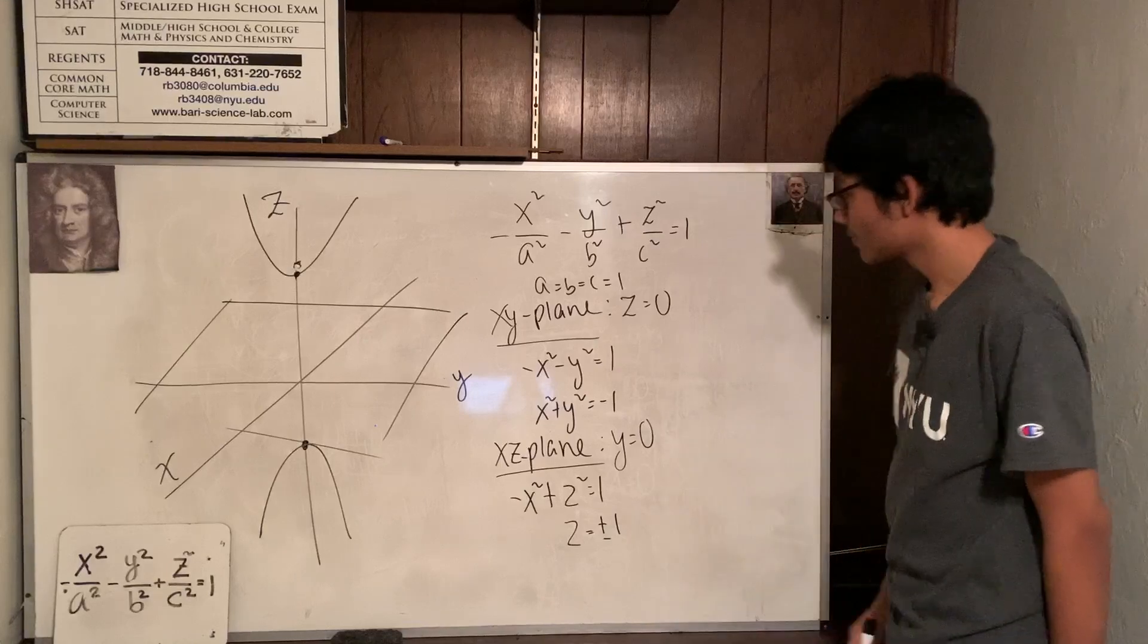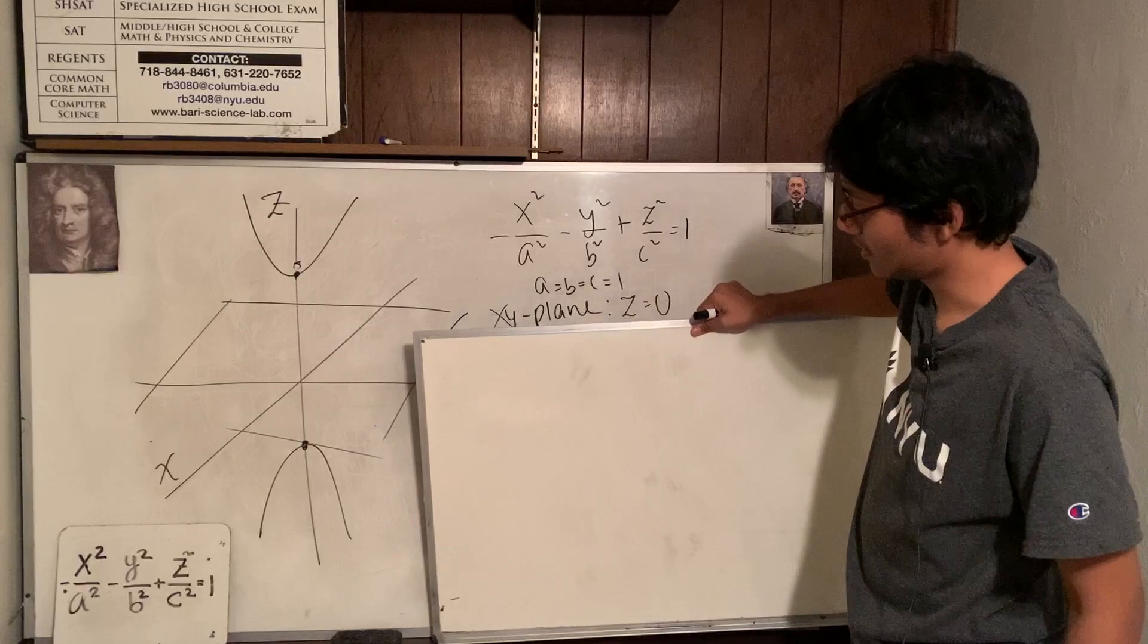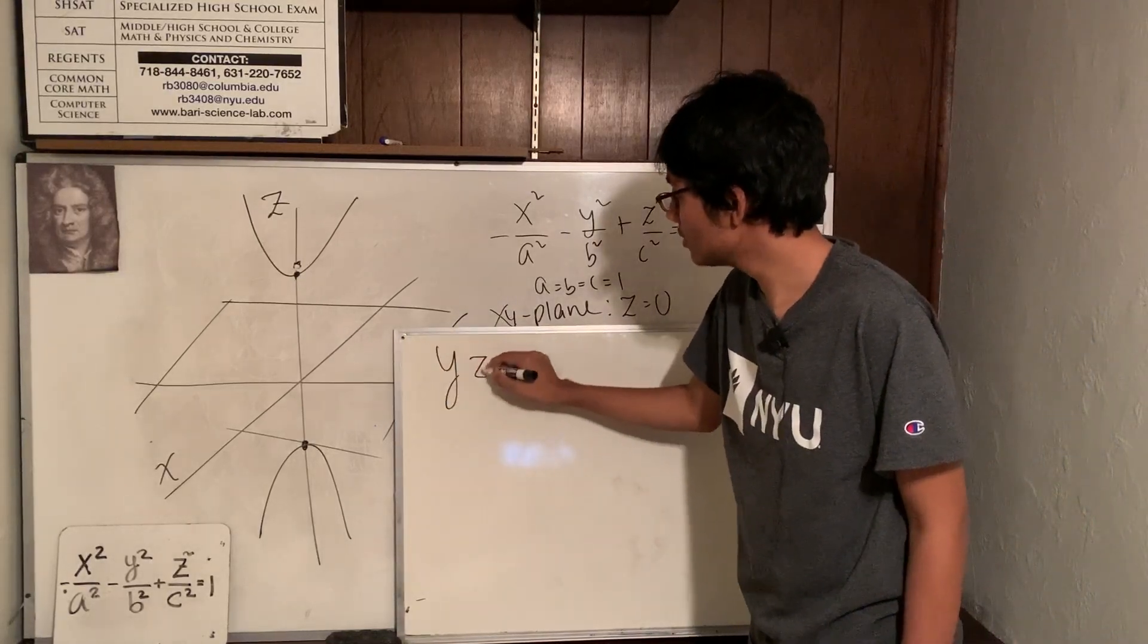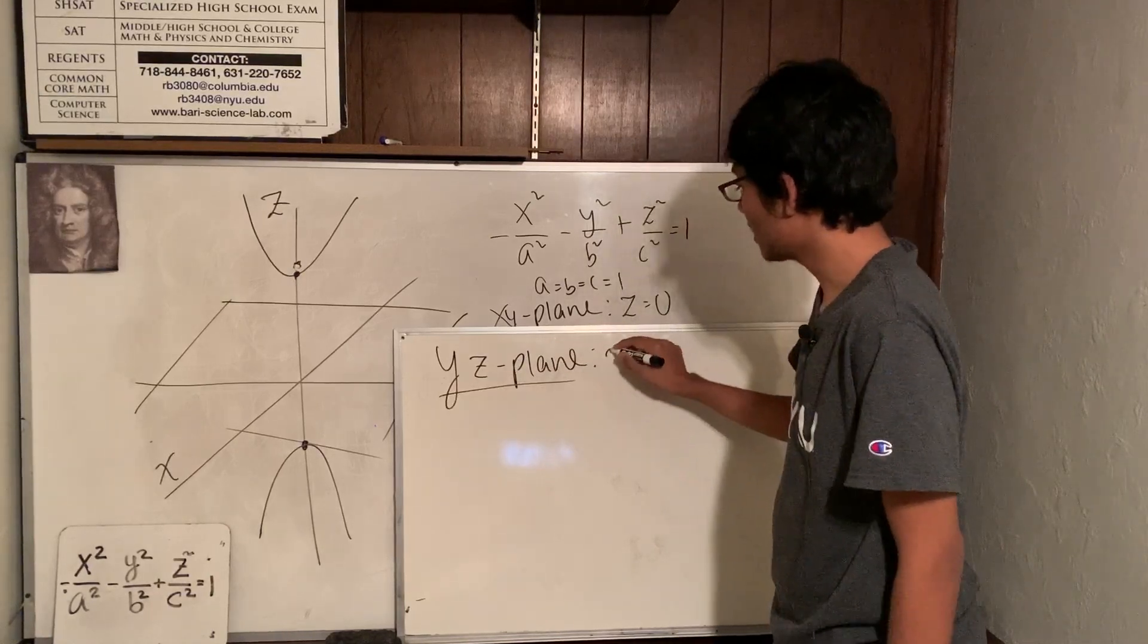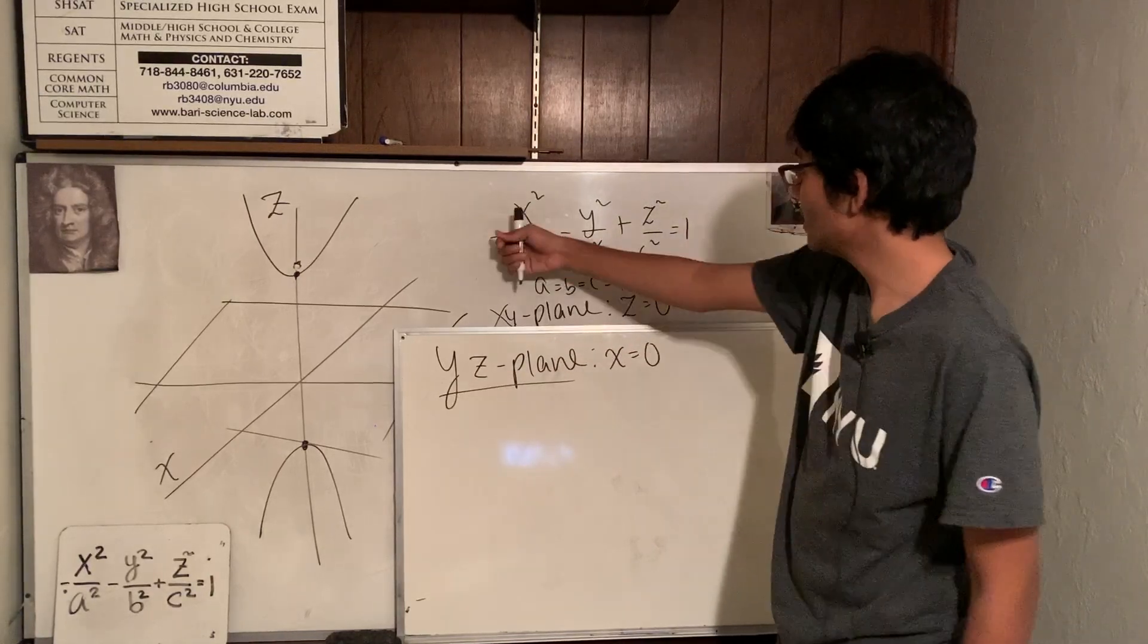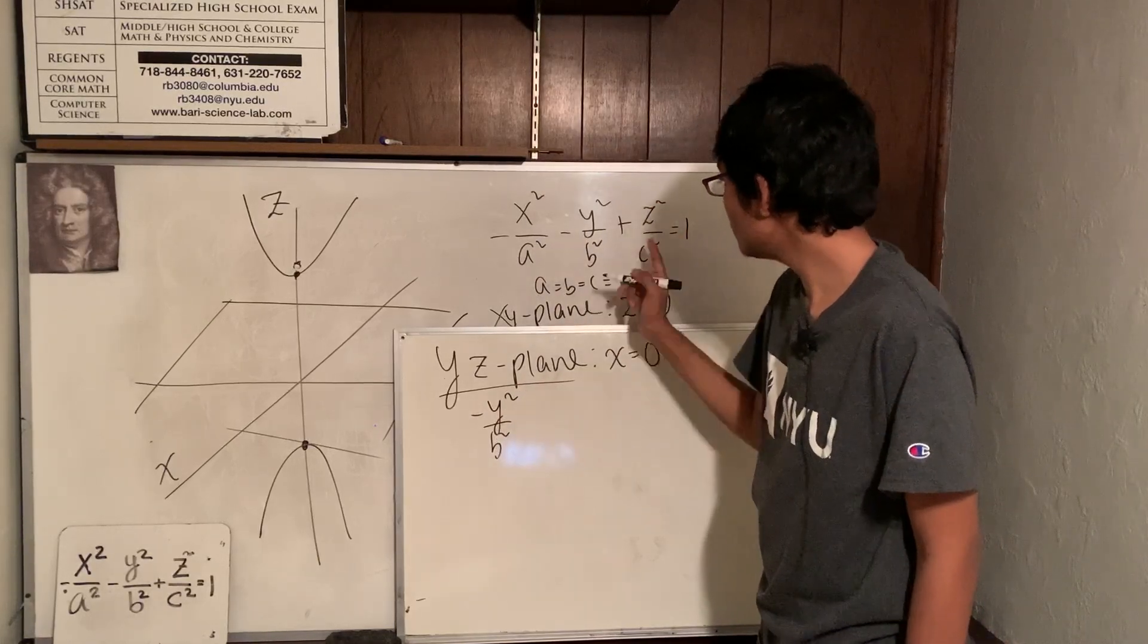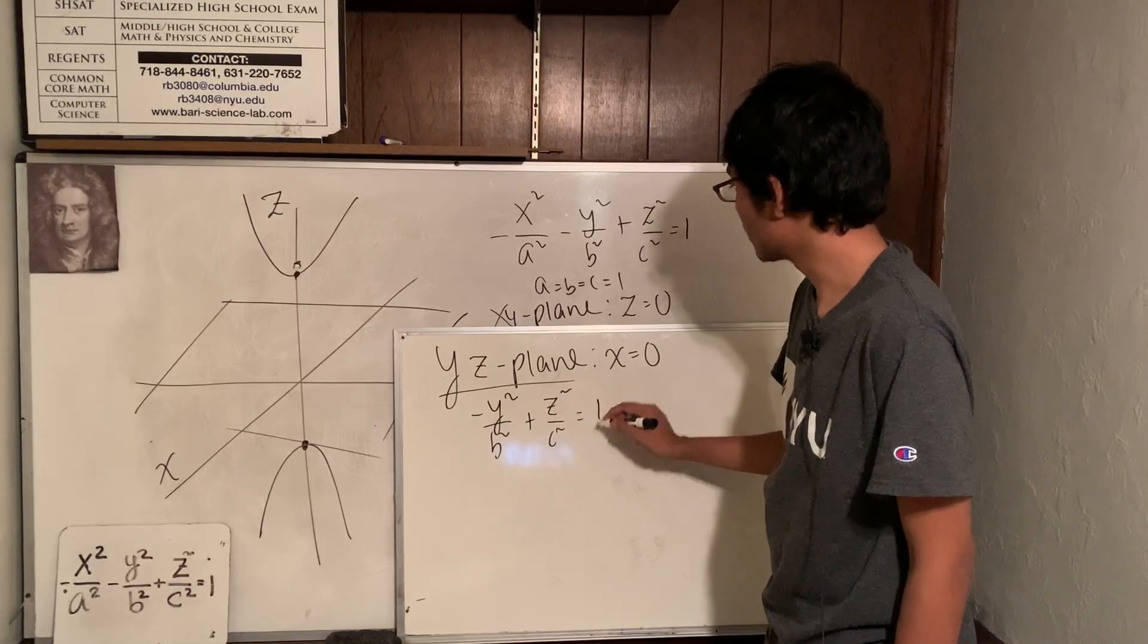And finally, let's look at our cross section on the y, z plane. Bring this guy up here. Cross section on the y, z plane. Well, to find that cross section, I know what I got to do. I got to fix x to be 0. Take this term, pop it right out. We're left with minus y squared over b squared plus z squared over c squared equals 1.